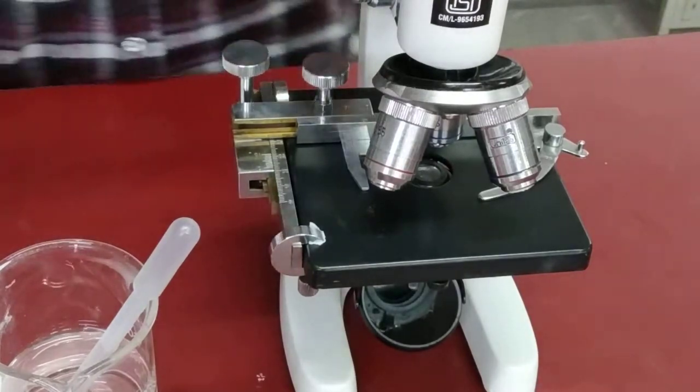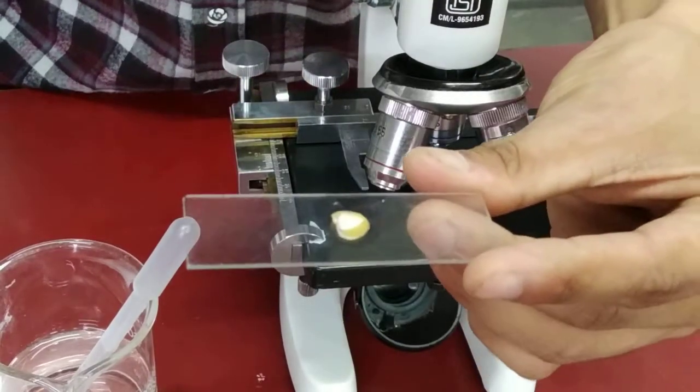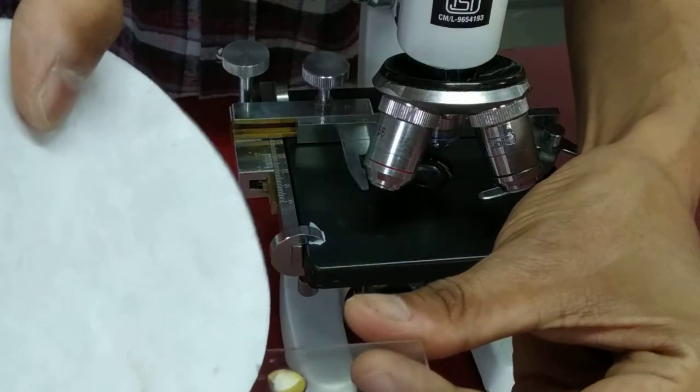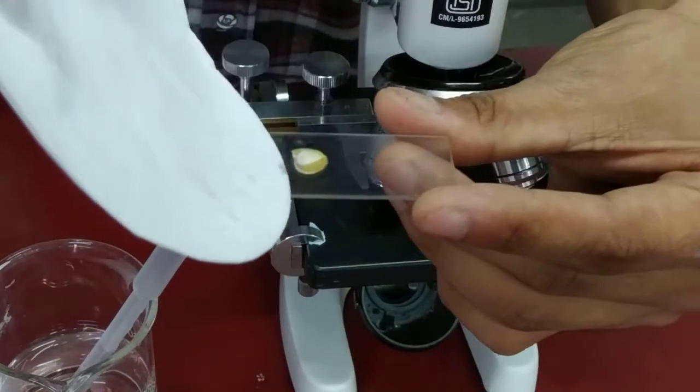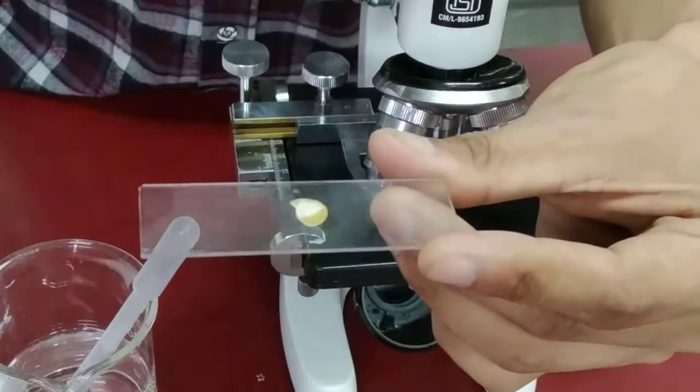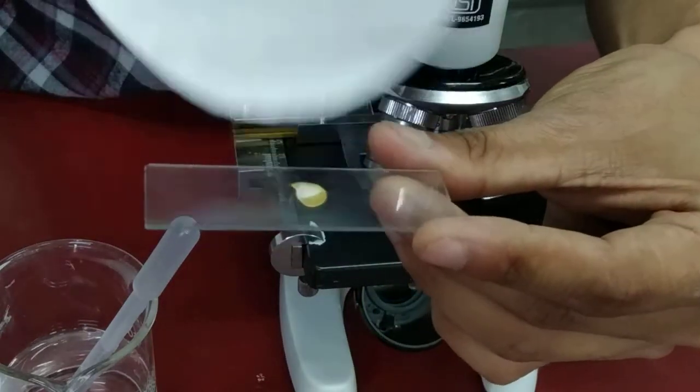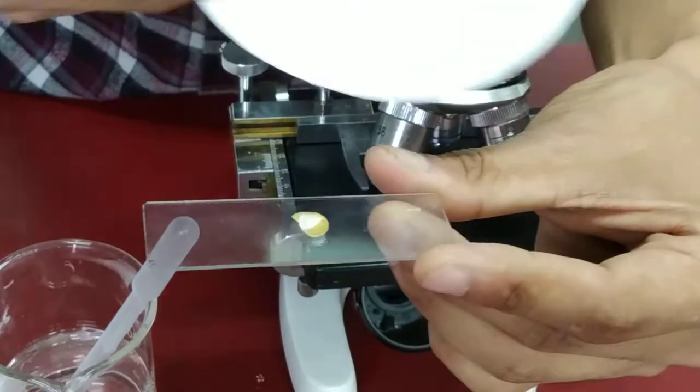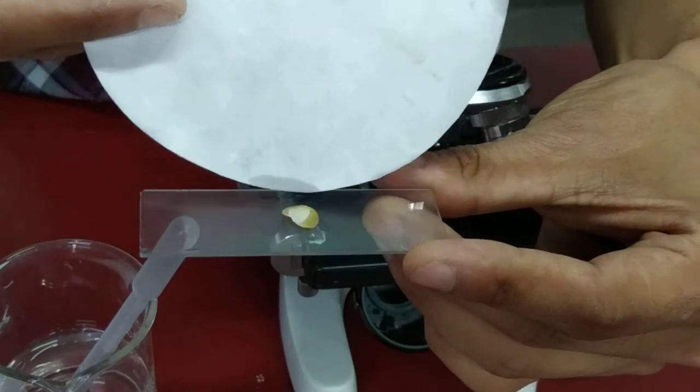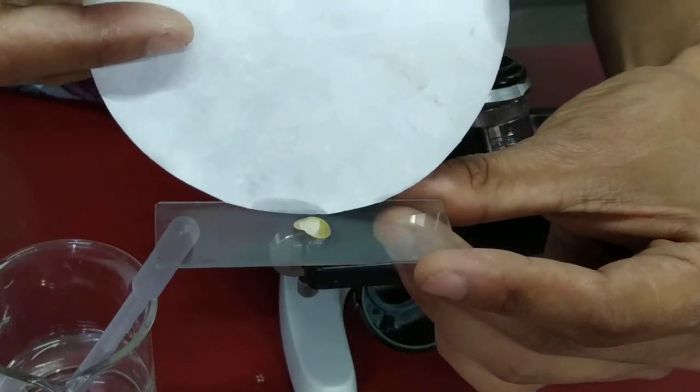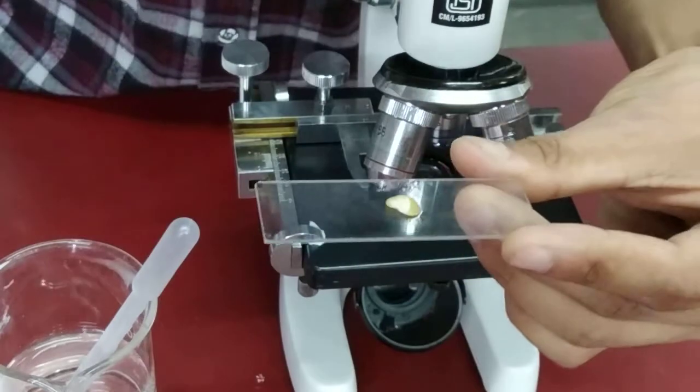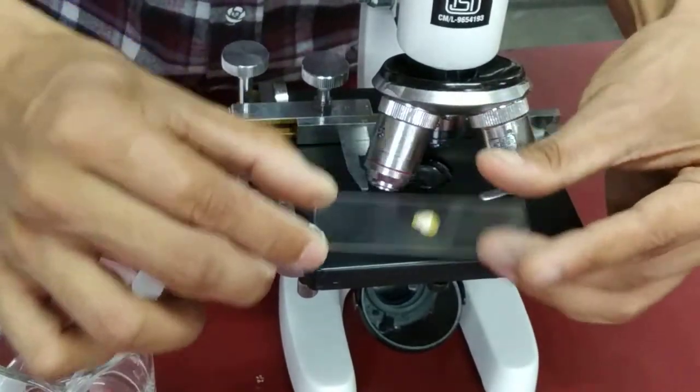So after the transfer of the section on a slide, what you are going to do is slowly dry off the water with the help of a filter paper. Then place it under a microscope.